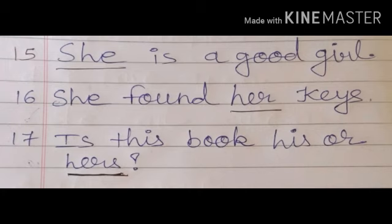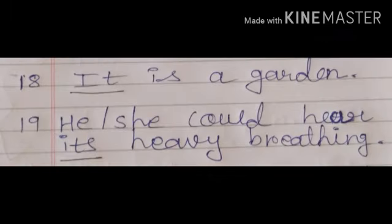Number seventeen: is this book his or hers? So here in this sentence, I underline 'hers' — hers is a personal pronoun. Number eighteen: it is a garden. So in this sentence, 'it' is a personal pronoun.